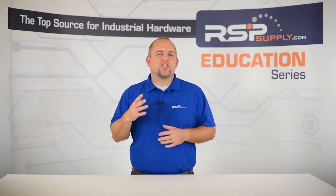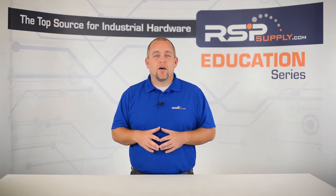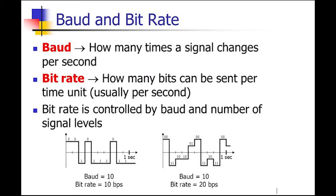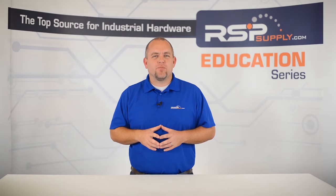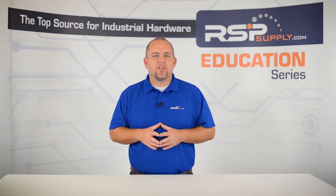The speed at which serial is communicated can be altered by adjusting what is known as the baud rate, which simply increases the number of bits that can be transmitted per second. This is one of the reasons serial communication methods have remained such a common method for basic communication in much of our computer-based hardware that we use today.